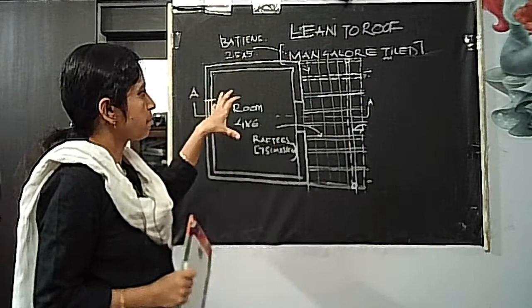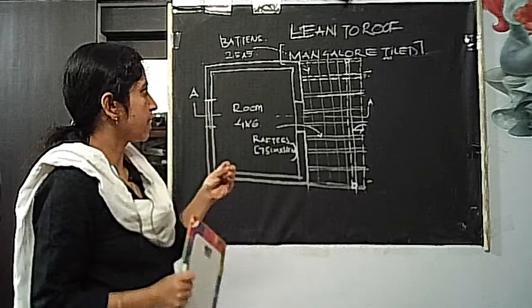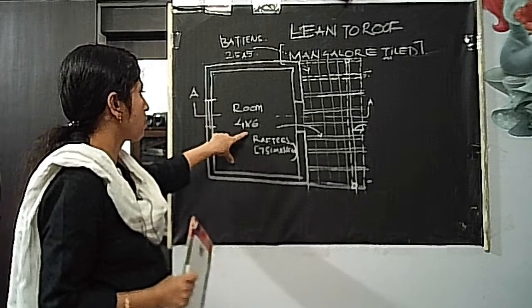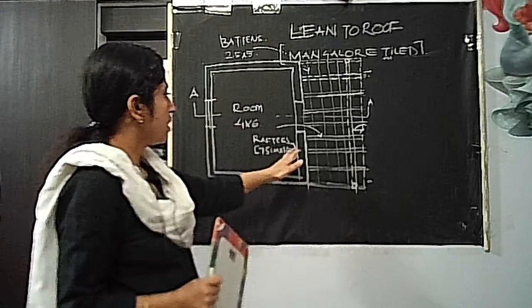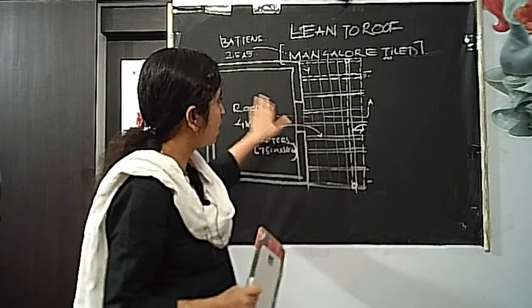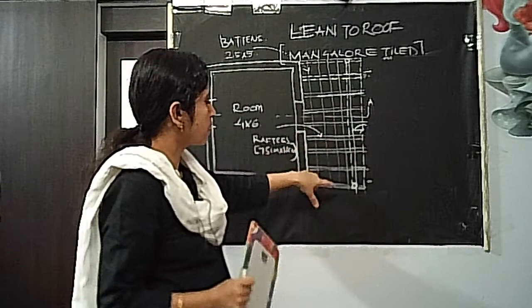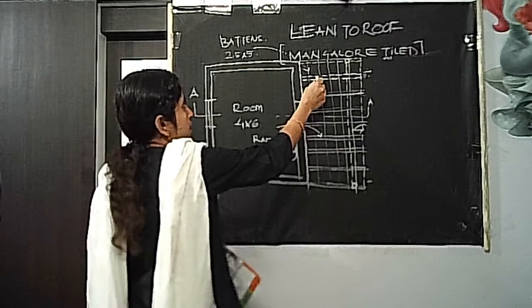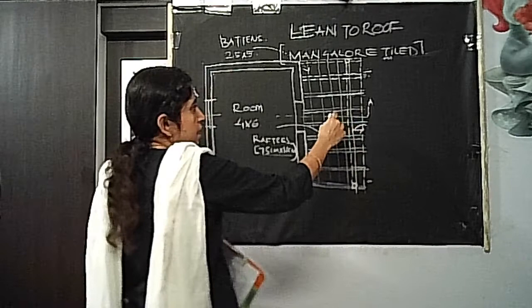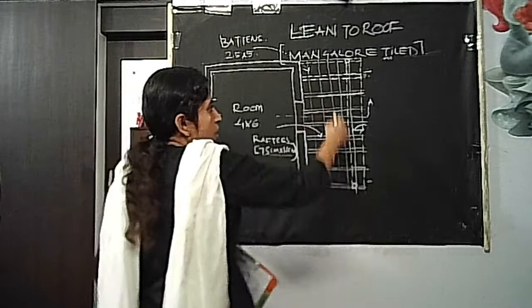Since the space on the board is very limited, I will take a small problem for explanation. This is a single room measuring 4 by 6 meters with a flat roof. There is an open veranda in the front which has the lean-to roof, leaning from this wall down. The lean-to roof consists of wooden supports — these are the rafters, the main rafters, which measure around 7.5 centimeter by 10 centimeter and are on the shorter span.